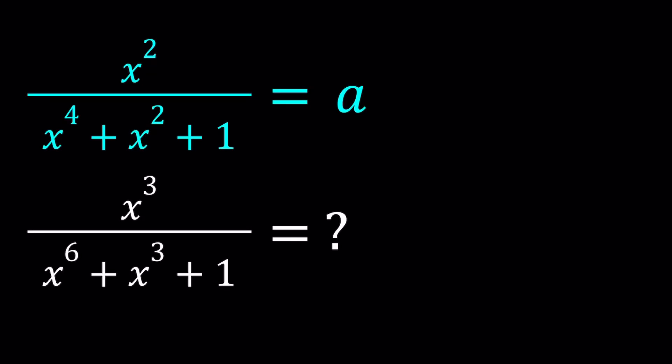Hello everyone. In this video we're going to be dealing with algebraic expressions. We have x squared divided by x to the fourth plus x squared plus one equals a. And we're going to evaluate or find x cubed over x to the sixth plus x cubed plus one in terms of a. So our expression is going to be in terms of a.